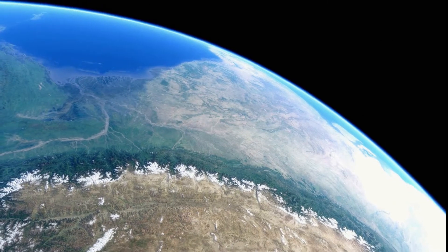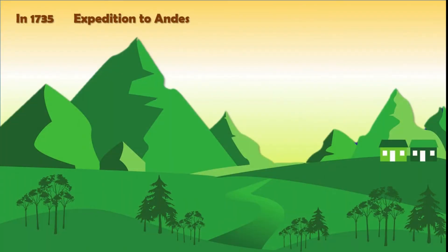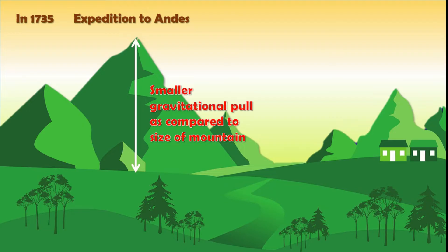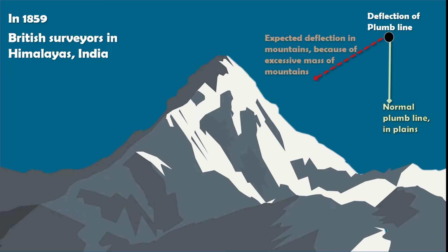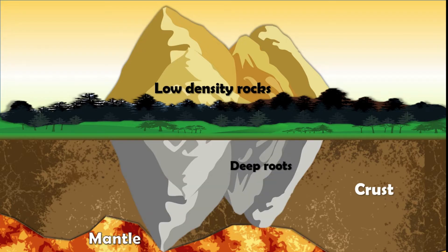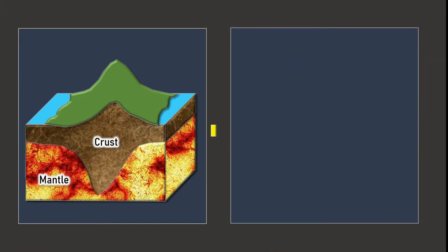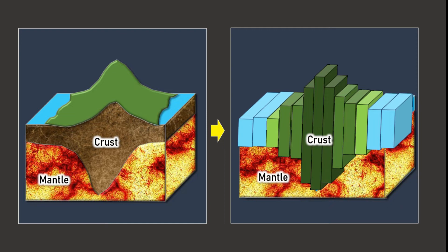How does it apply to Earth? Before going to how it applies to Earth, we must understand how it was discovered by scientists. In 1735, geoscientists on an expedition in the Andes discovered that the gravitational pull of the mountain was much smaller than expected. Similarly, in 1859, British surveyors in India also detected a discrepancy in calculation of gravitational deflection. The gravitational attraction of the Himalayas was not matching with its enormous size. Studies revealed that mountains are of low-density material, with a deep root projecting into the mantle. After this discovery, many explanations were given. Scientists suggested that the blocks of crust are floating isolated in a fluid asthenosphere — they can move vertically but cannot interact with neighboring blocks.